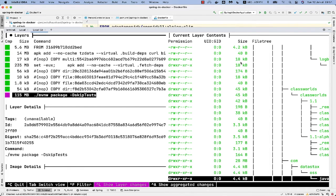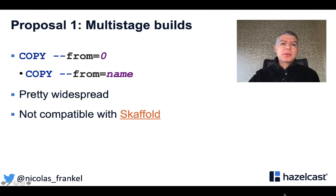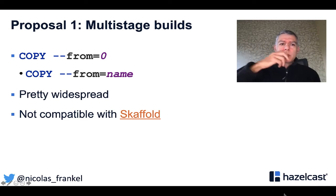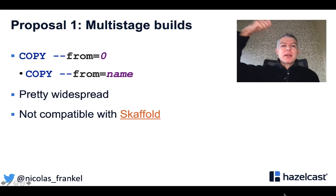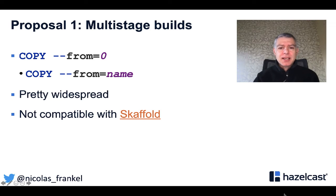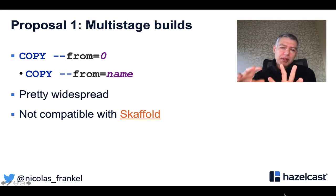One way to do better is to use multi-stage builds. Multi-stage builds allow you, inside the same Dockerfile, to change the base image and copy a file from a previous stage into your current stage. This is really widespread and a great thing to use. But if you are using Skaffold — a tool that lets you configure your Docker to automatically publish to Kubernetes, either locally or to a remote cluster — the problem is that multi-stage builds are not compatible with Skaffold, so be careful about that.